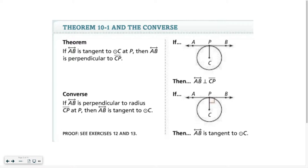Theorem 10-1: if line AB is tangent to circle C at point P, that means my radius is perpendicular to that line. And the converse — when you just flip the order — if I know that this is a 90-degree angle, I know that line AB is tangent to circle C.